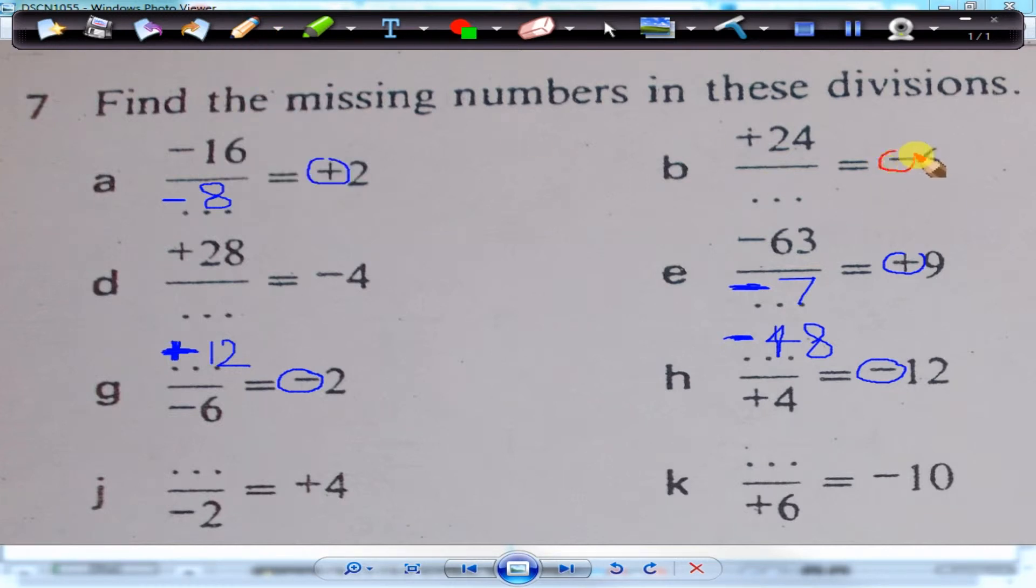So, that's minus, indicating that these two are different. Opposite, that would be 4. Yes. This one's minus, indicating these two are different. So, that's plus 6. That would be minus 60.